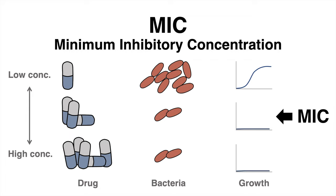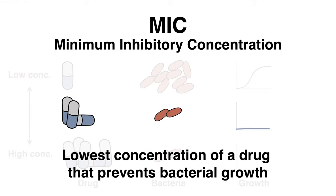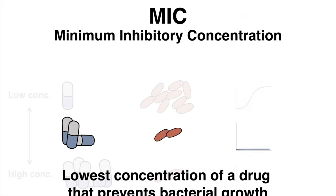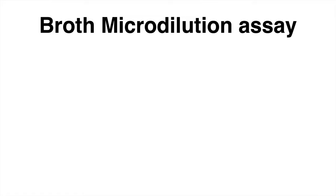Therefore, the MIC is considered the lowest concentration of a drug that prevents bacterial growth. The most commonly used method to determine the MIC is the broth microdilution assay.